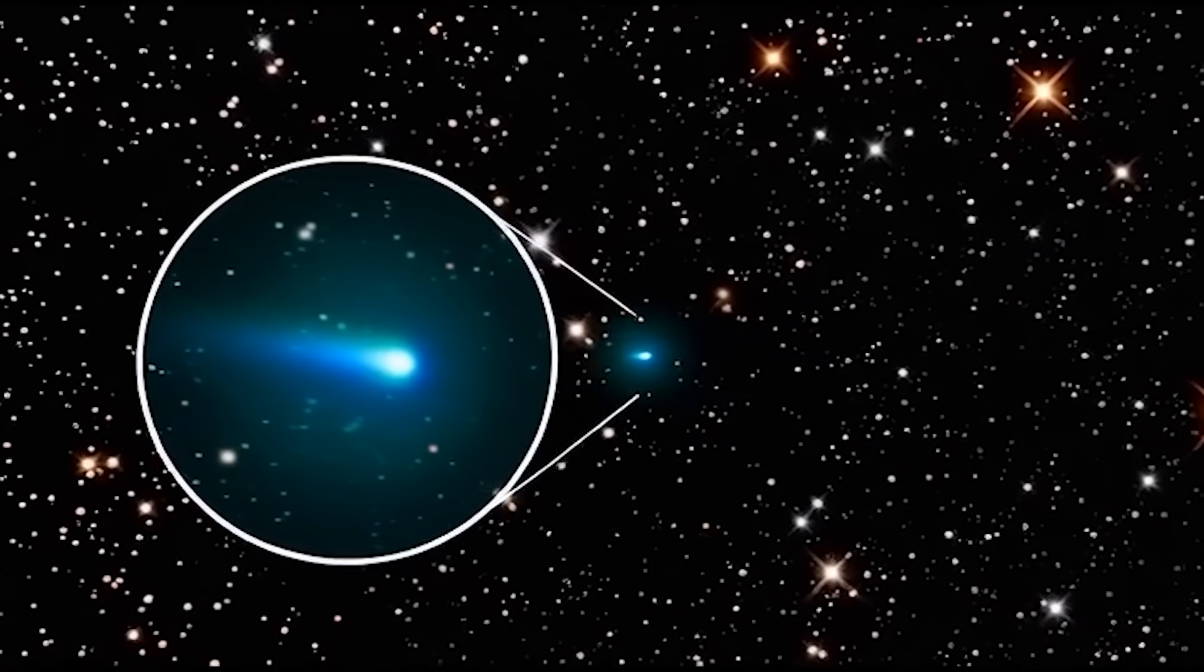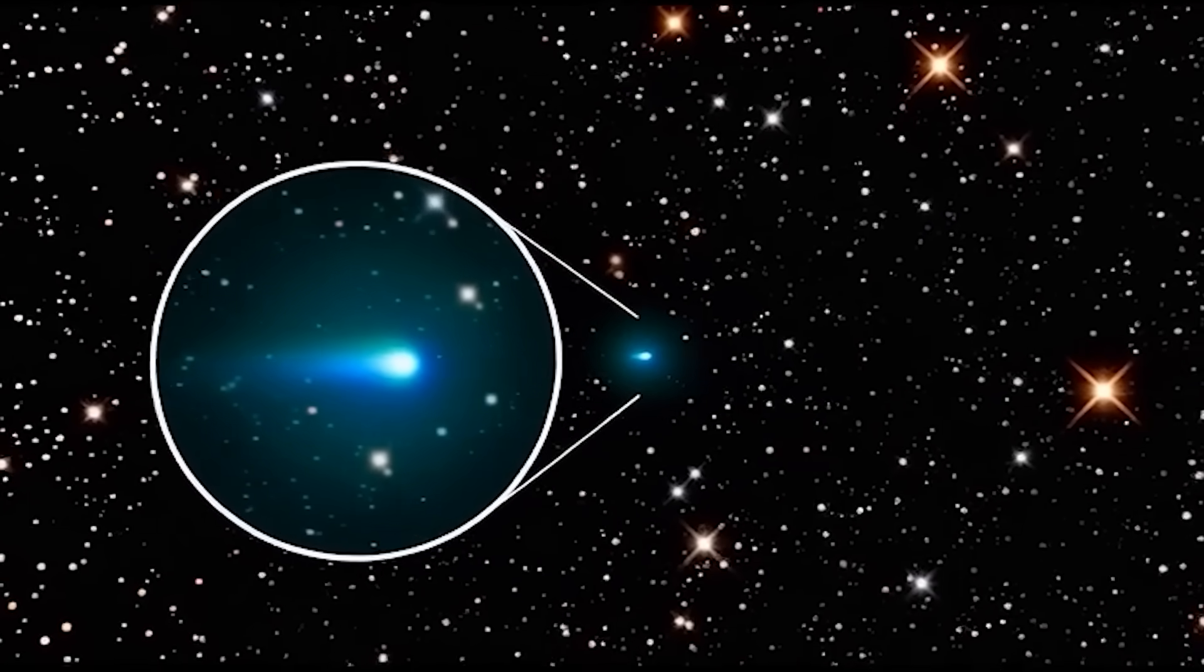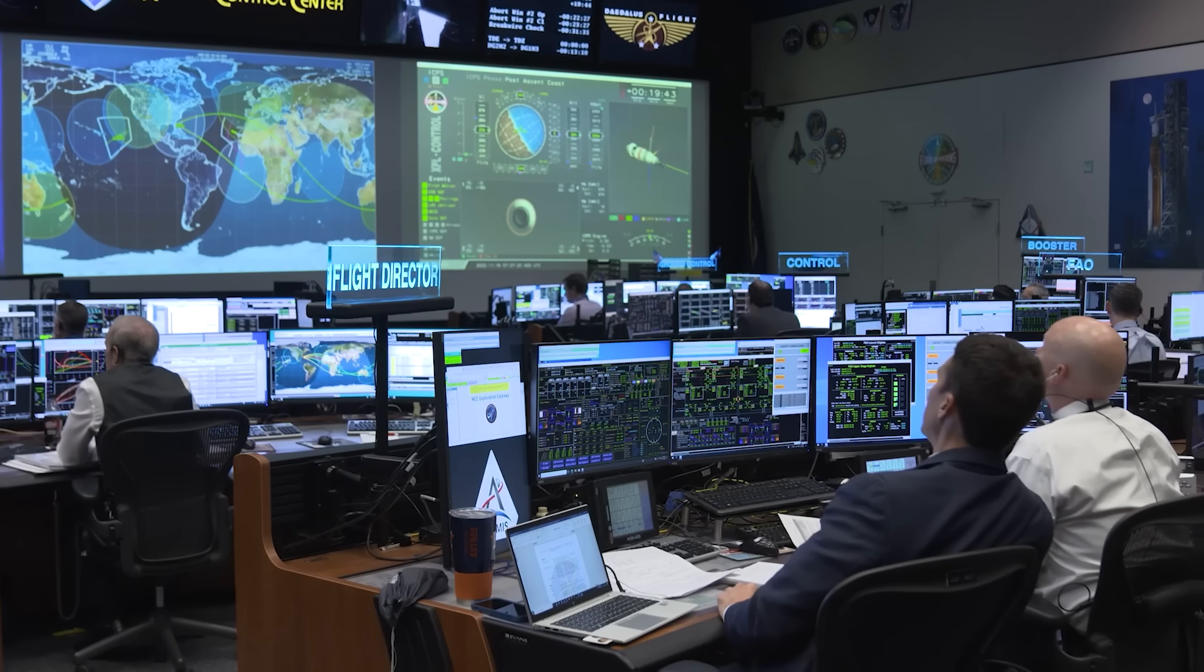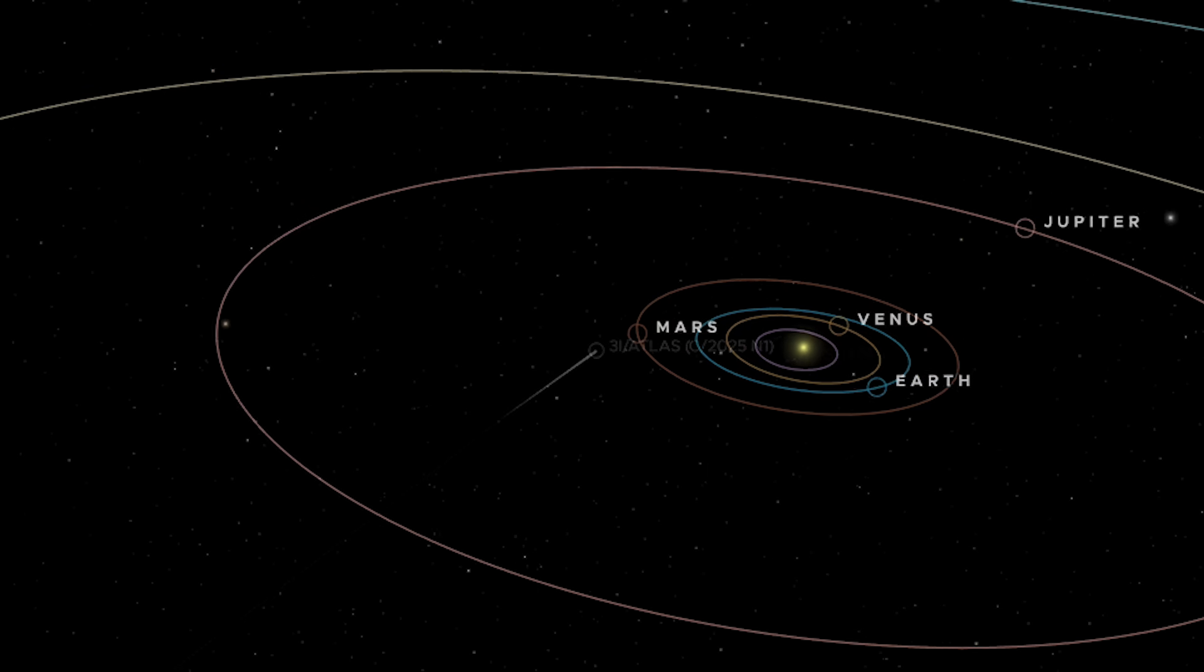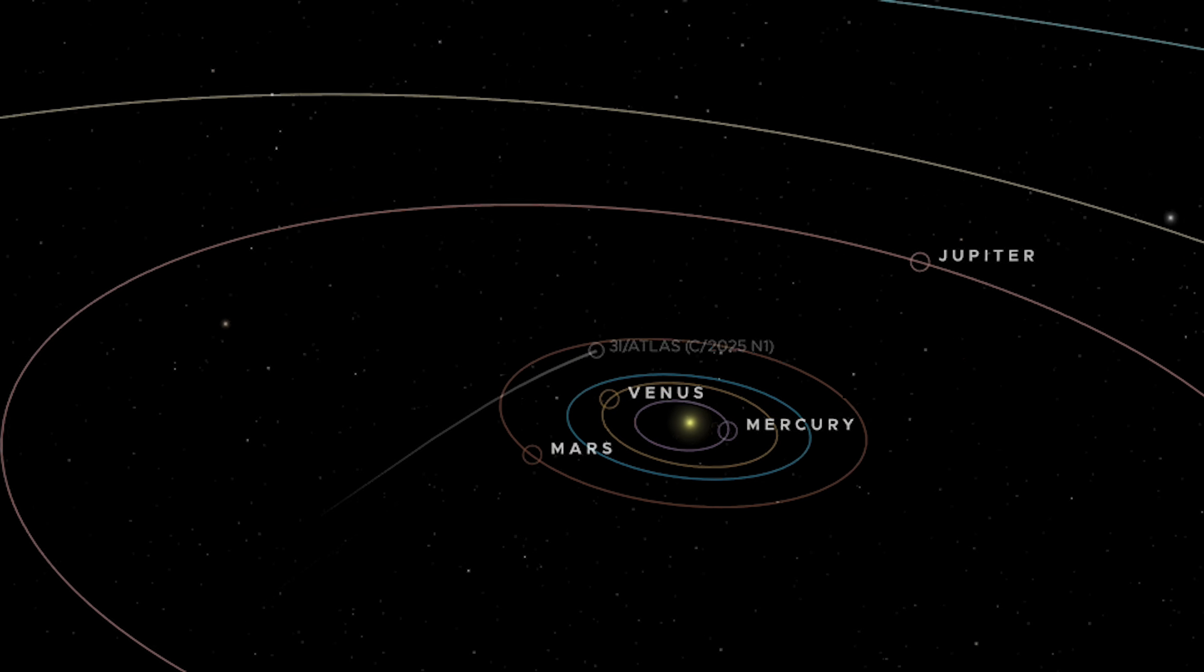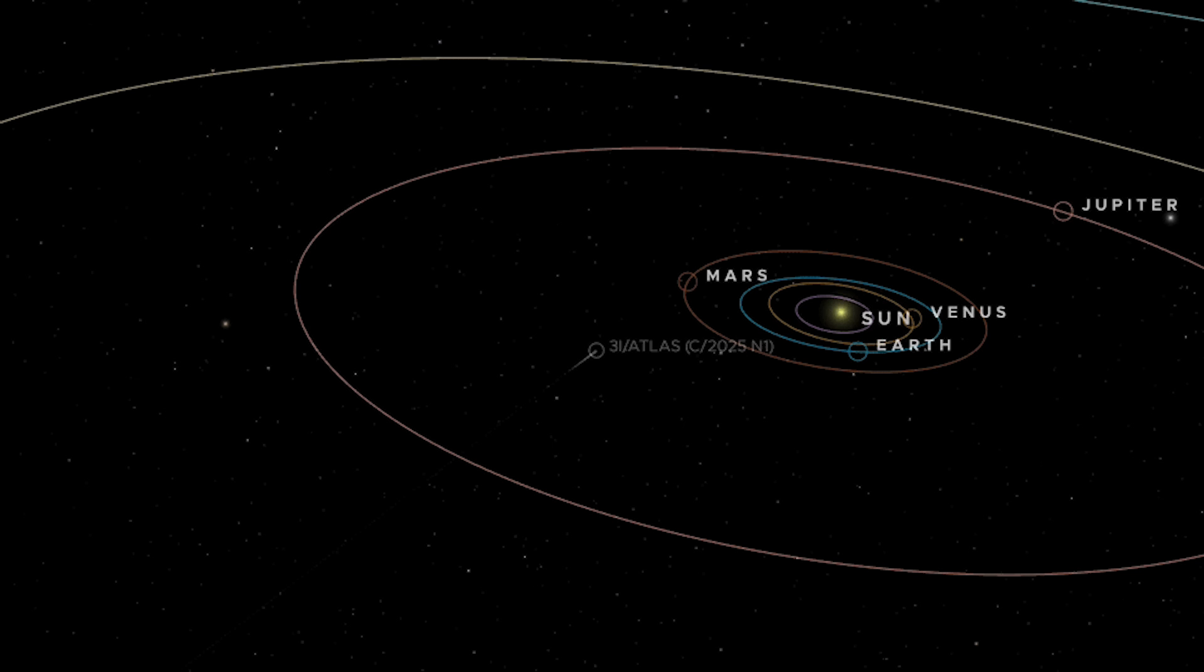But unlike its predecessors, 3i Atlas appeared just as human systems faltered. Its timing would expose the fragility of our supposedly global view of the sky. At first, everything unfolded as planned.